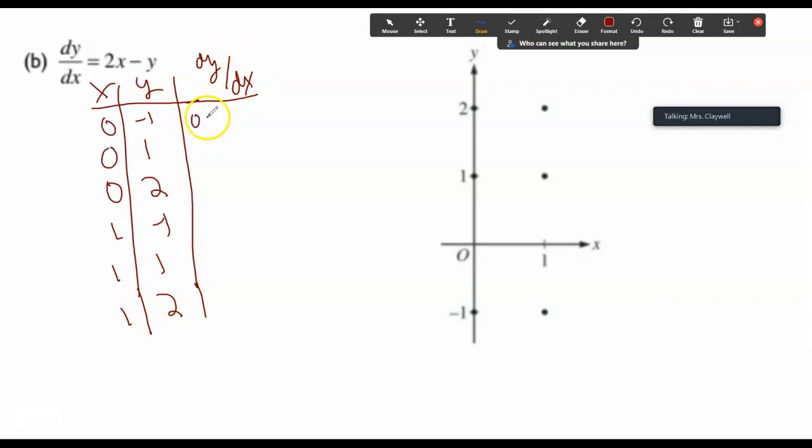This becomes 0 minus negative 1, or just a 1, 0 minus 1 or negative 1. 0 minus 2, or negative 2, so a more negative slope.